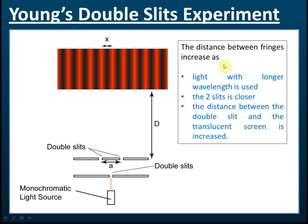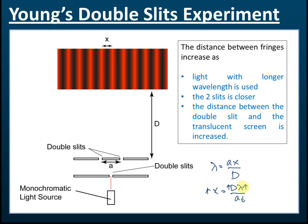Another thing you need to know is what are the factors that affect the distance between the fringes — that affect X — how to make X bigger or smaller. To answer this, we refer to the formula: lambda equals ax over d, and therefore X equals d·lambda over a. From this equation, X will increase if d increases, or if lambda increases, or if a decreases, because X is directly proportional to d and lambda, and inversely proportional to a.